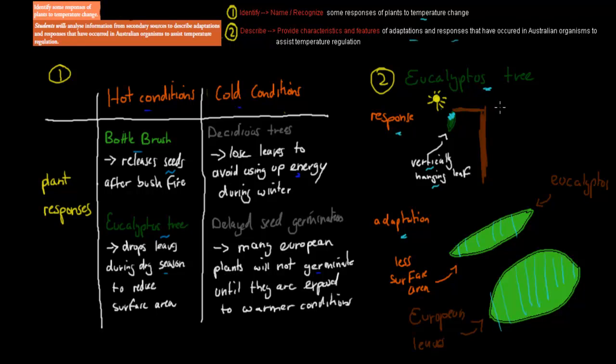You should also know one example each of an Australian endotherm and an ectotherm — for example, the red kangaroo and the blue-tongued lizard. That was a quick summary of the dot points for the first context point of the Maintaining Balance module.